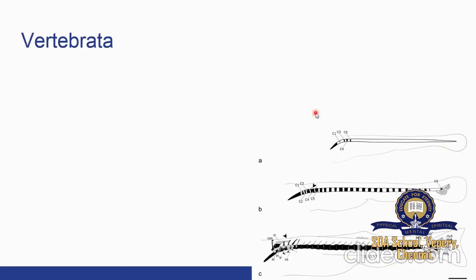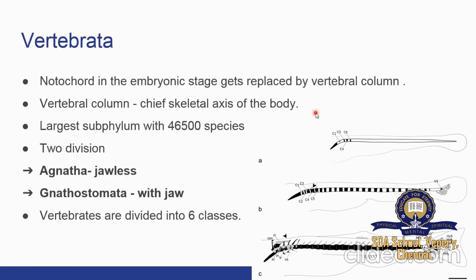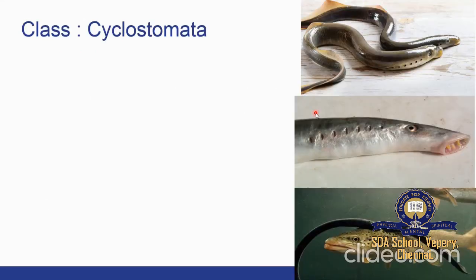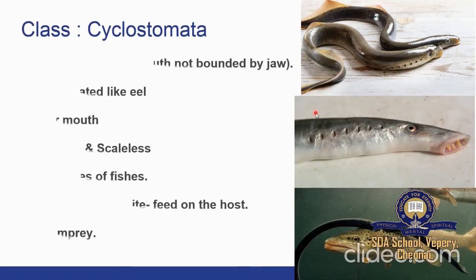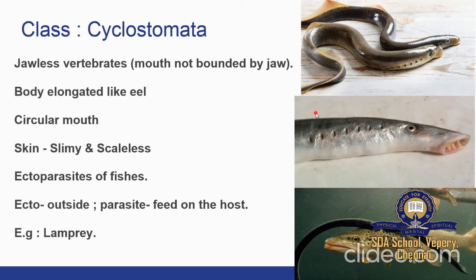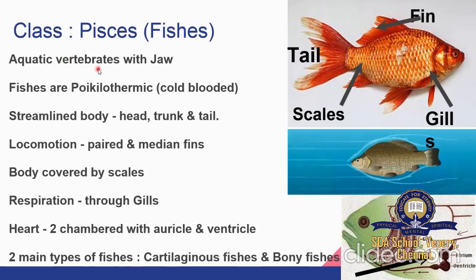Next is Vertebrata. This group is characterized by the presence of a vertebral column or backbone. The notochord in the embryonic stage is replaced by the vertebral column, which forms the chief skeletal axis of the body. Vertebrata are grouped into six classes. The first class is Cyclostomata — jawless vertebrates where the mouth is not bounded by jaws. The body is elongated like an eel with a circular mouth. The skin is slimy and scaleless. They are ectoparasites on fishes. Example: hagfish and lamprey.